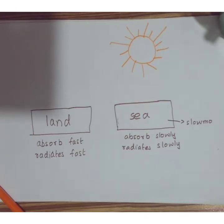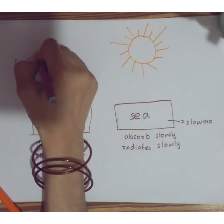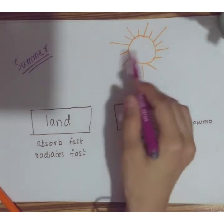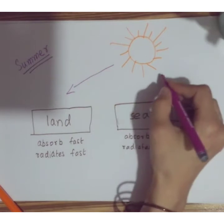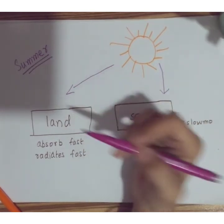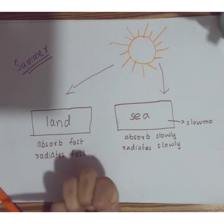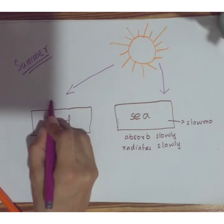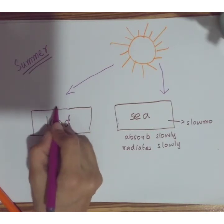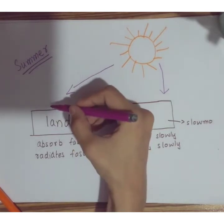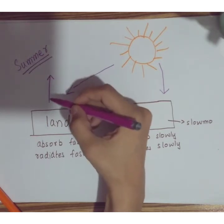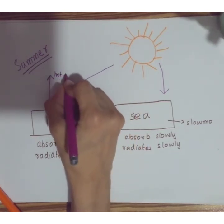Now let's look at what happens during the summer season. The Sun is shining brightly, heating up both the land surface and the sea. The land has a tendency of absorbing heat very fast, so it becomes very hot. The air above the land also becomes hot — hot air is less dense, and less dense air has a tendency of moving upwards, so this hot air rises up.